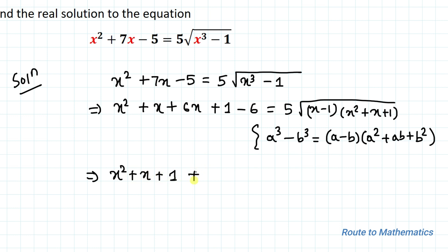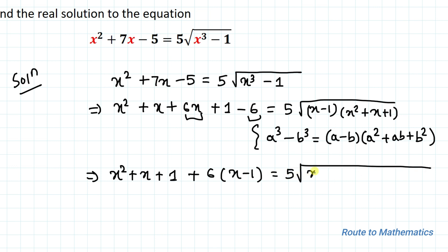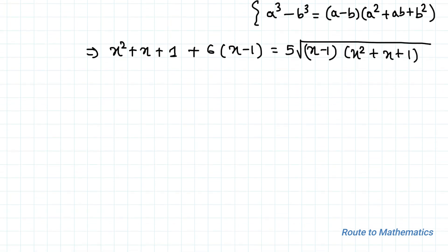So we have (x² + x + 1) + 6(x - 1) = 5√((x-1)(x² + x + 1)). In the next step, I will divide both sides by (x - 1), giving (x² + x + 1)/(x - 1) + 6 = 5 · √(x-1) · √(x² + x + 1) / (x - 1).